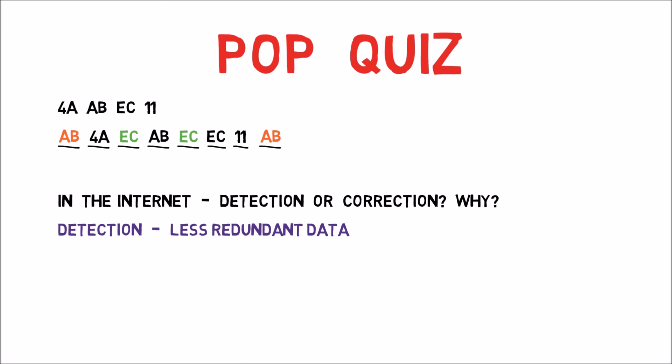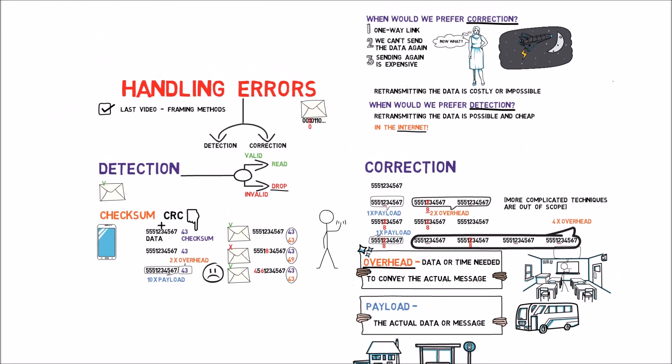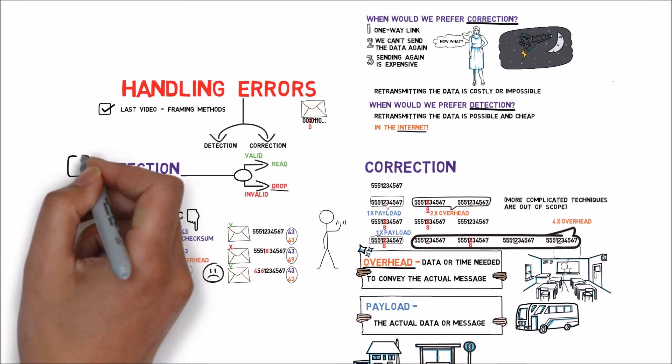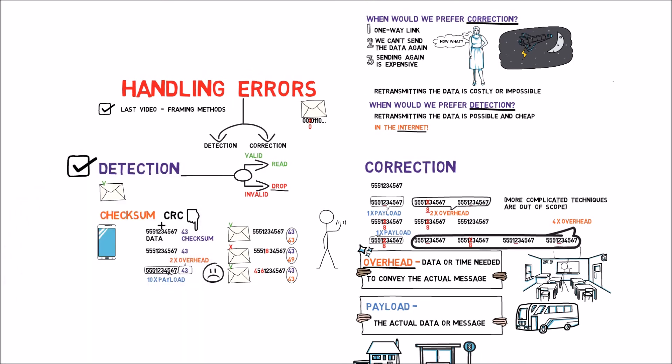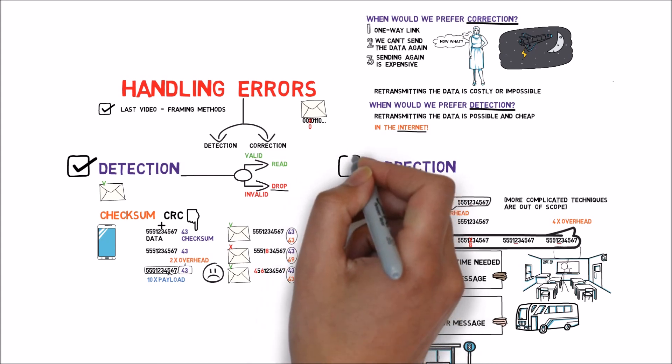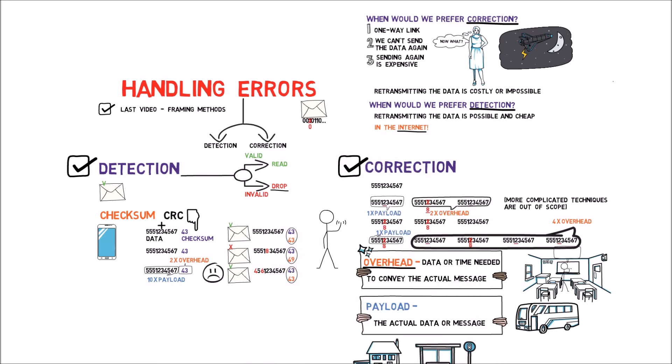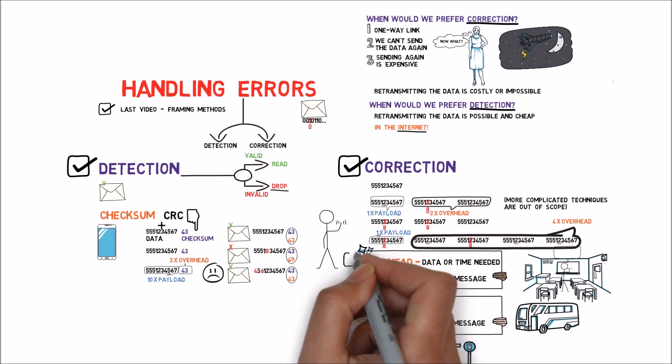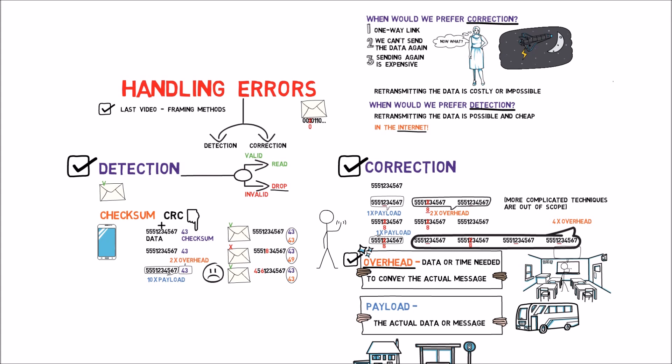In this video we discussed various methods for handling errors. We looked at error detection, where we only know whether a frame is valid or not. We also considered error correction, where the receiver can restore the correct value of an error in a frame. We also introduced the term overhead. We then understood why we use error detection in the internet rather than error correction. In the next video, we shall meet our first real-life protocol: 802.3 Ethernet. Stay tuned.